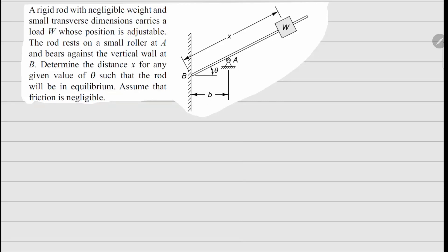This is problem 1.21. It says a rigid rod with negligible weight and small transverse dimensions carries a load W whose position is adjustable.